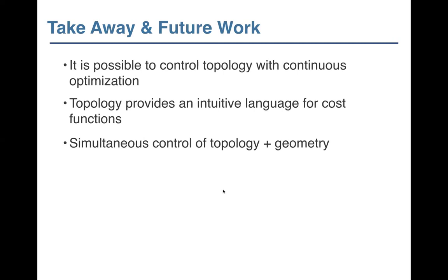The key takeaway from this talk is that it is possible to control topology using continuous optimization. Given rough topological constraints, we can optimize in a continuous way using gradient descent or other techniques and push the algorithm towards the topology we'd like. Topology provides an intuitive language — it's an easy way to describe the kind of output we want, and it translates into very intuitive cost functions. The result is simultaneous control over both topology and geometry.